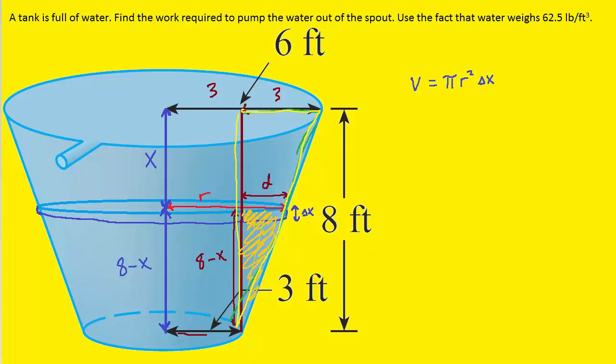So we can say that the side D divided by this side of 8 minus X, so those are two sides of the orange colored triangle, would correspond to the side over here that's marked 3 in the yellow triangle, divided by this side right here. Now that length right there is the full 8 feet. And we're going to solve this for the distance D. So we'll cross multiply to get 8 times D is equal to 3 multiplied by 8 minus X. And then we can divide both sides by 8. And so we have an expression for D.